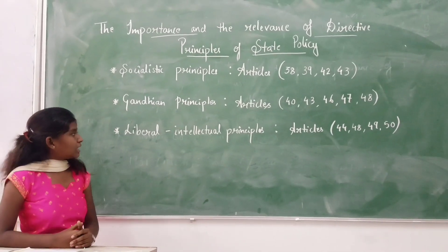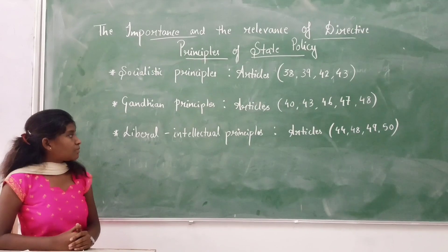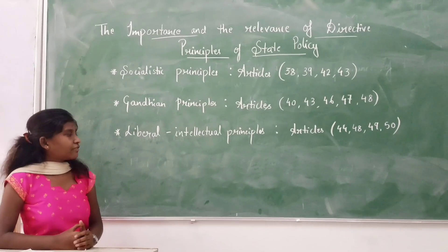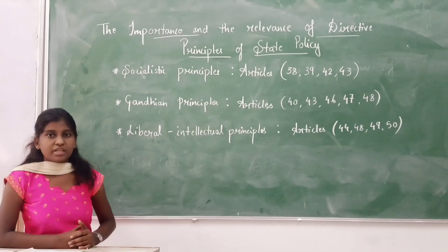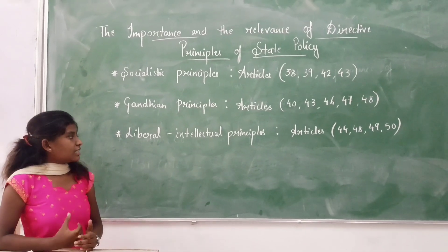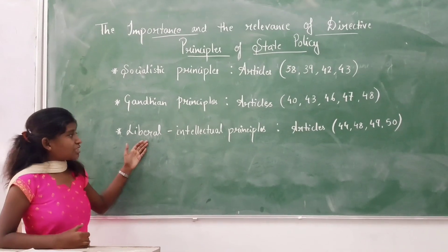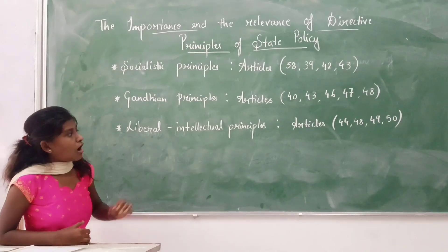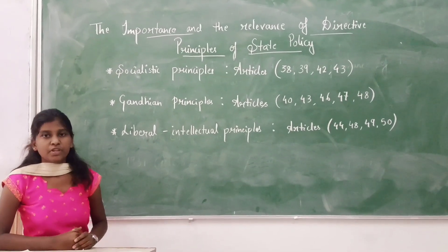The next one: liberal intellectual principles. These are the principles that reflect the ideology of liberalism. This principle includes articles 44, 48, 49, and 50.